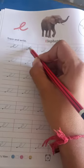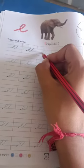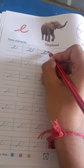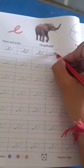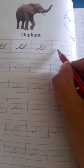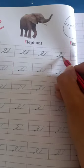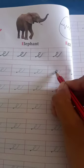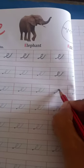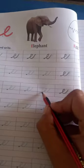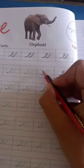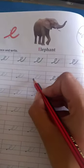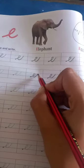आप करेंगे. E as elephant, E as egg, E as earth. Okay. E as earth.